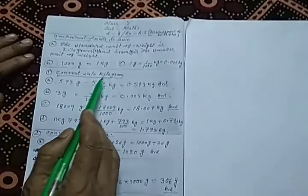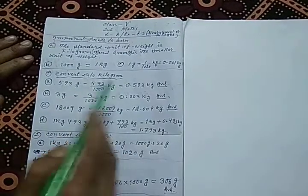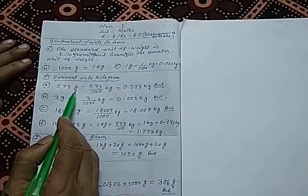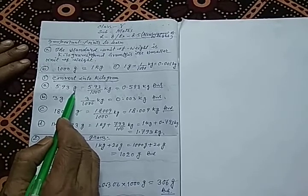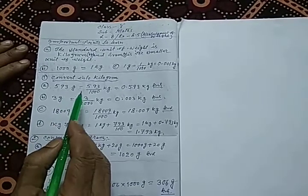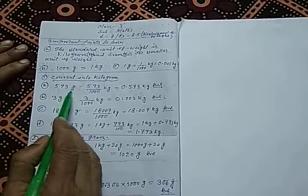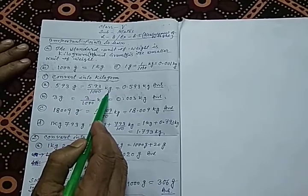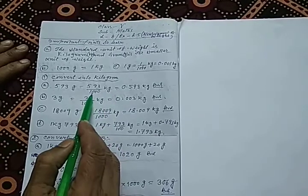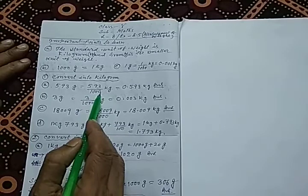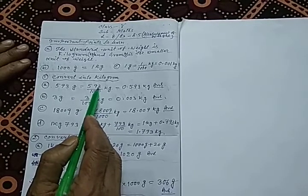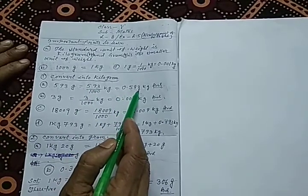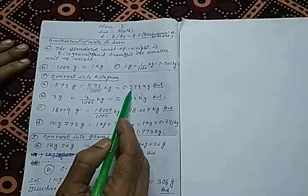First instruction: convert into kilogram. In A, it is given 593 gram, to be converted to kg. Since gram is converted into kg by dividing by 1000, 593 is divided by 1000. There are three zeros, so the decimal point is placed after three digits from the right side. The result is 0.593 kg.